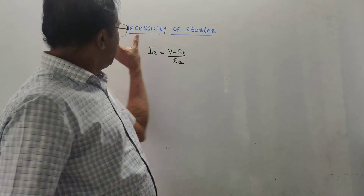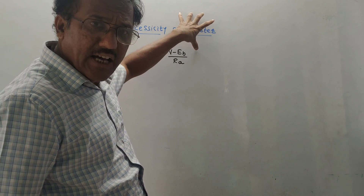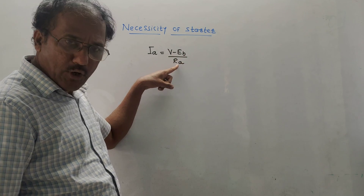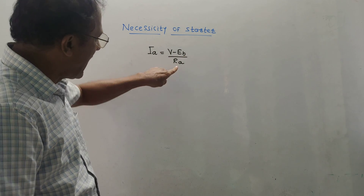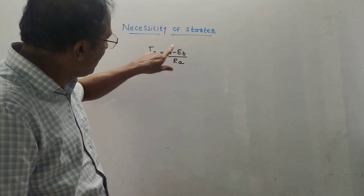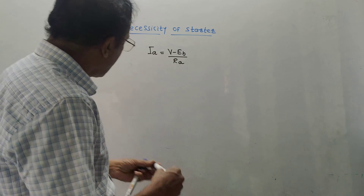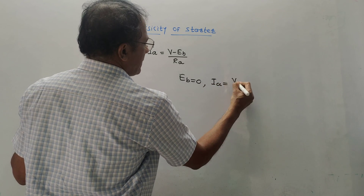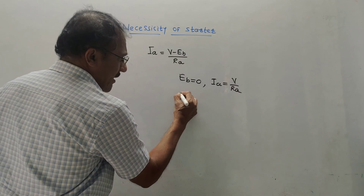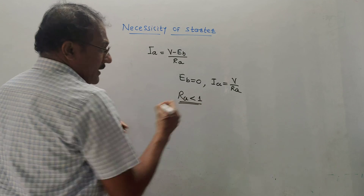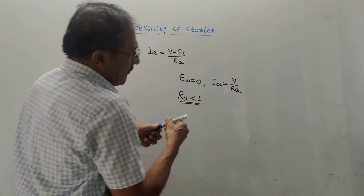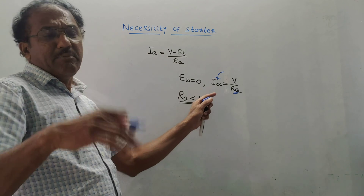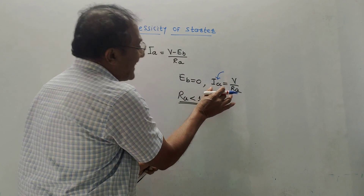The next important part is the necessity of starters for a DC motor. IA = (V − EB) / RA. Initially when you start the DC motor, value of EB is 0. So armature current becomes IA = V / RA. Since value of armature resistance RA is very small — less than 1 ohm — V divided by a small value produces a very large armature current IA, which may damage the armature winding.